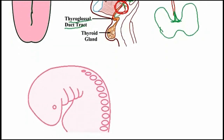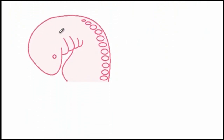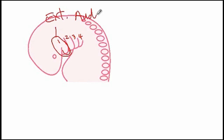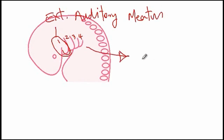The other condition I would like to talk about is a branchial cleft cyst. During embryonic development, branchial clefts 1, 2, 3, and 4 exist. Branchial cleft 1 gives rise to the external auditory meatus, and then the 2nd, 3rd, and 4th ones give rise to the cervical sinus, which would normally get obliterated.